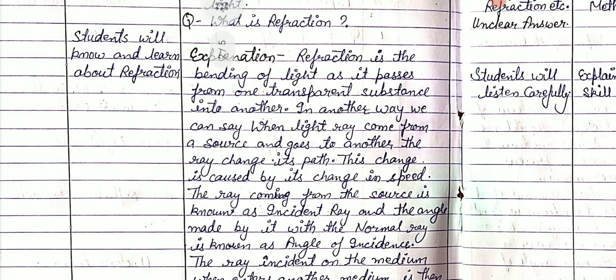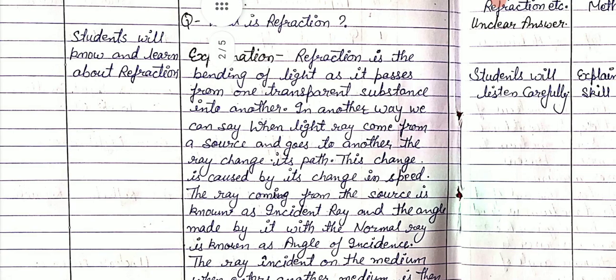Refraction is the bending of light as it passes from one transparent substance into another. In another way, when a light ray comes from a source and goes to another medium, the ray changes its path. This change is caused by its change in speed.